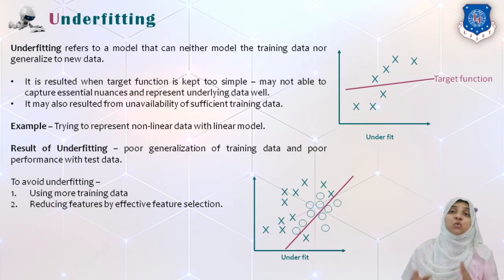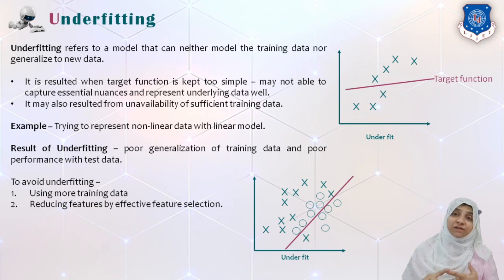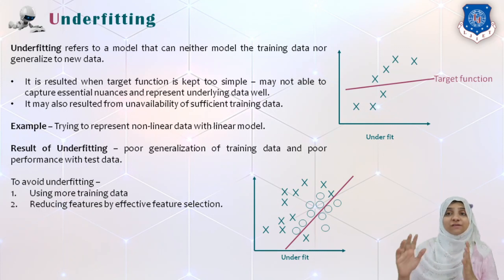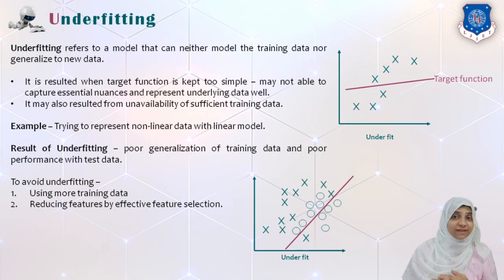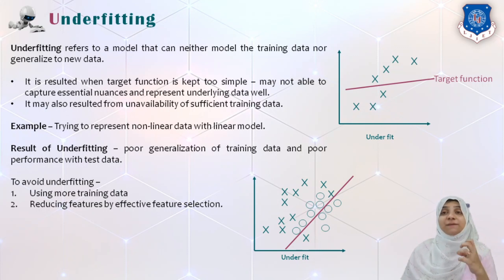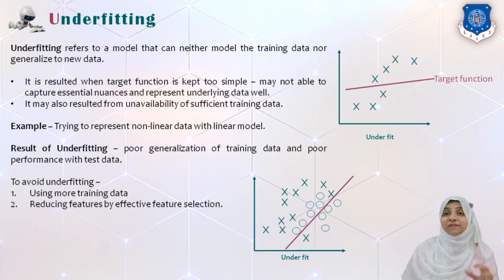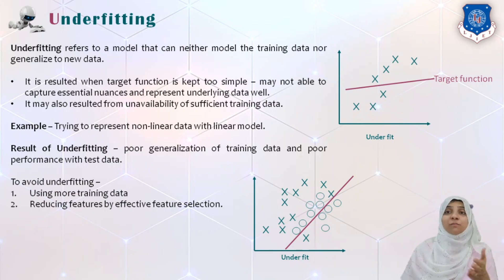In order to avoid underfitting, we must use as much data as possible for training. We can also reduce features by effectively performing feature selection. Since there will be no noise in features, we will have cleaner feature data.